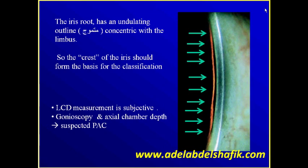Keep in mind that the surface of the iris is not flat — some areas are more elevated than others. So make your assessment on the narrowest part of the angle. If it is narrow, you need to put on a goniolens and check with gonioscopy.